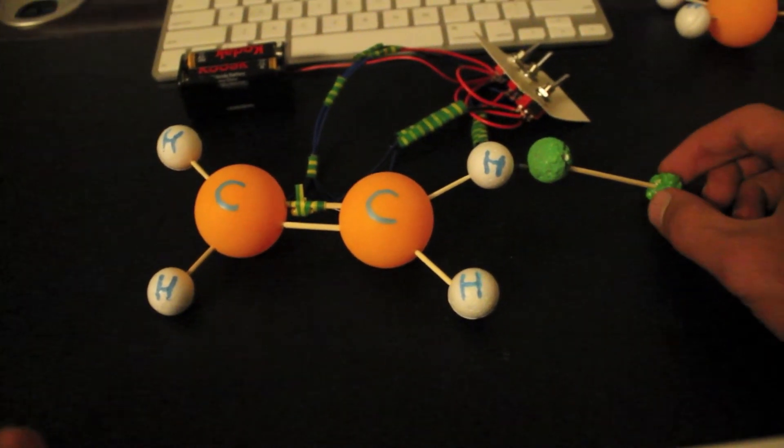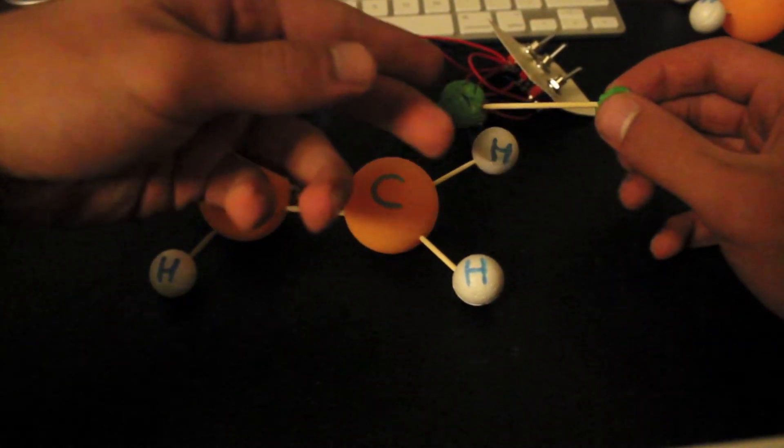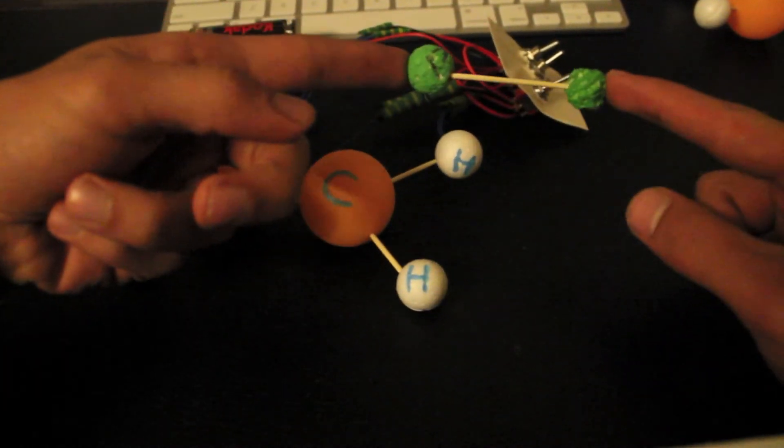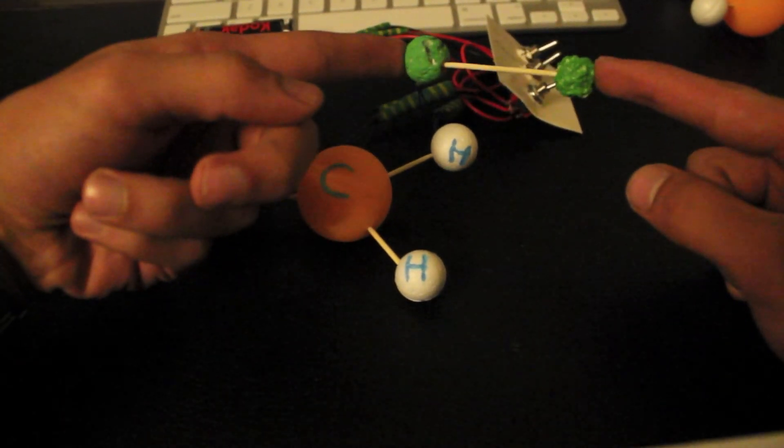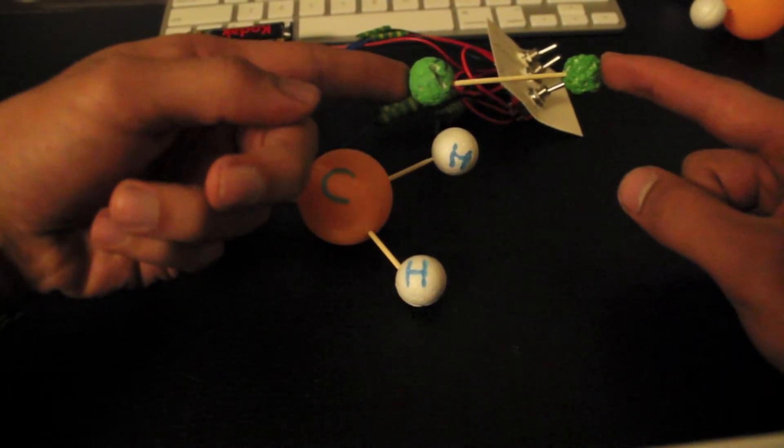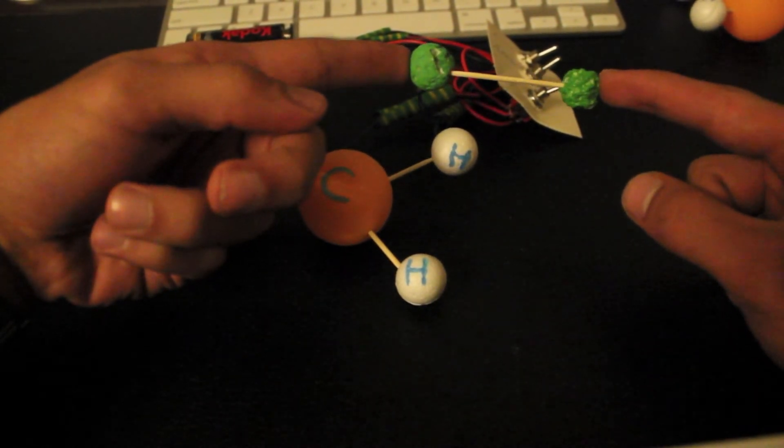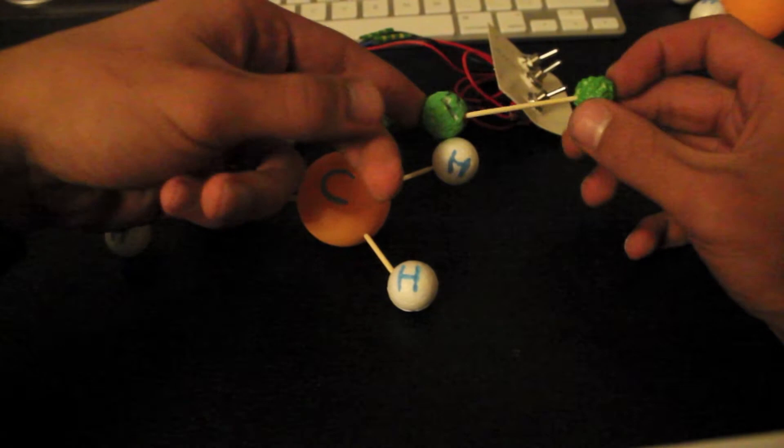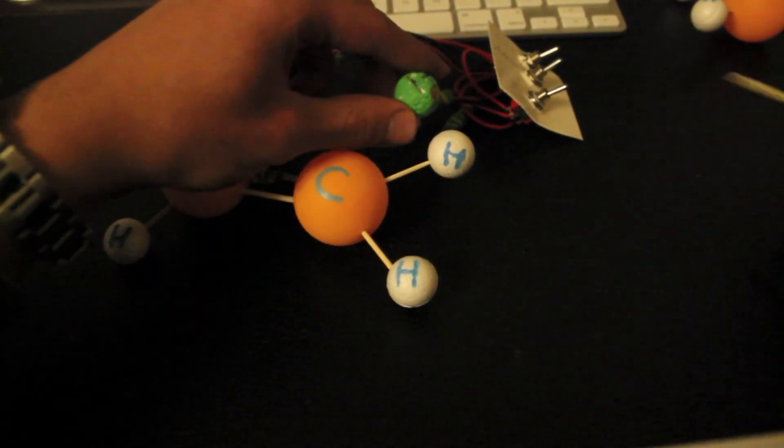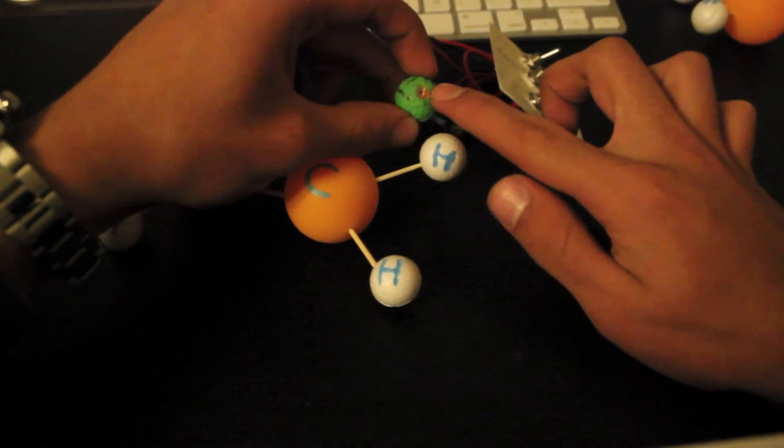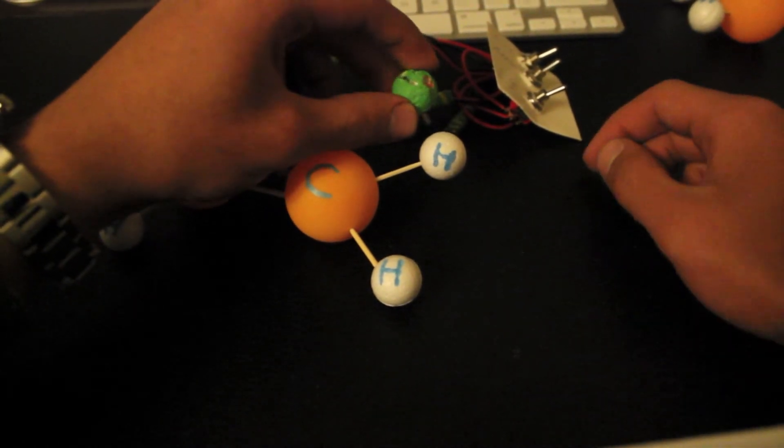Now, in order to start the initiation process we need to have chlorine gas, and basically what we do with the chlorine gas is that we heat it under certain temperatures and pressures, and what that will do is that it will break the bond. And once the bond is broken we are left with a radical on each chlorine.